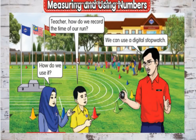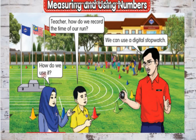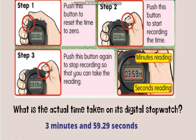Now, let's take your science textbook. We have to refer to page 6. How do we record the time of our run? We can use a digital stopwatch. This is a digital stopwatch. There are a few steps to use a digital stopwatch.